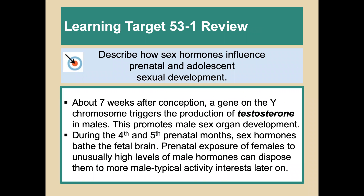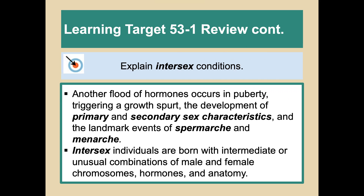Learning target review: About seven weeks after conception, a gene on the Y chromosome triggers testosterone production in males, promoting male sex organ development. During the fourth and fifth prenatal months, sex hormones bathe the fetal brain. Prenatal exposure of females to unusually high levels of male hormones can dispose them toward more male-typical activity interests later on. Another flood of hormones occurs at puberty, triggering a growth spurt and the development of primary and secondary sex characteristics, with the landmark events of spermarche and menarche. Intersex individuals are born with unusual combinations of male and female chromosomes, hormones, and anatomy.